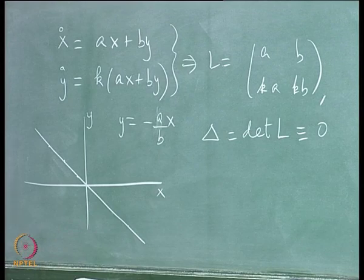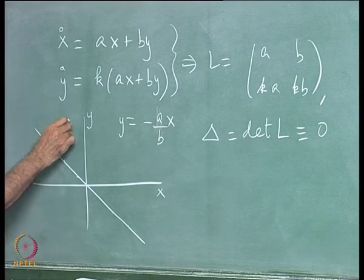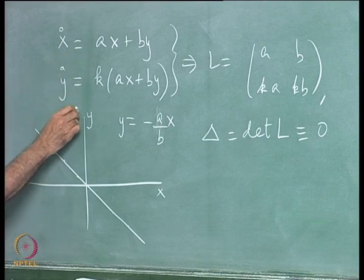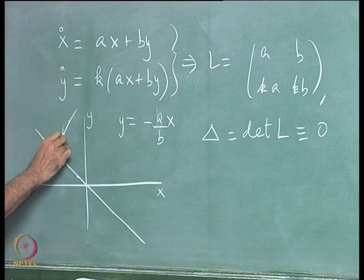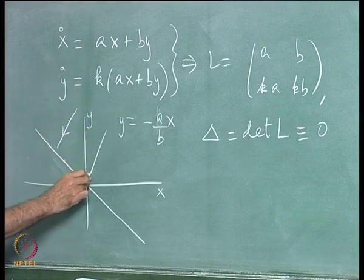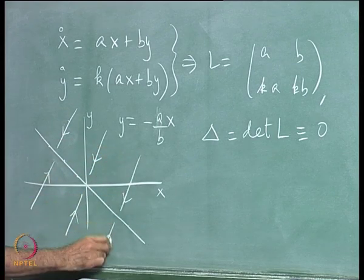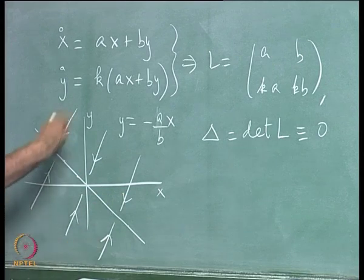You could then ask what the flow looks like — what happens if you have an initial condition that starts off this line. This depends on the signs of the constants, but in general the flow would be either along this line inwards everywhere, or perhaps outwards, with all arrows going outwards.